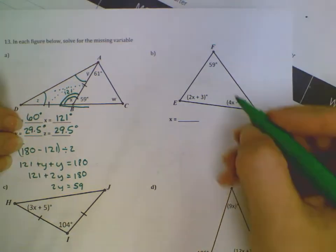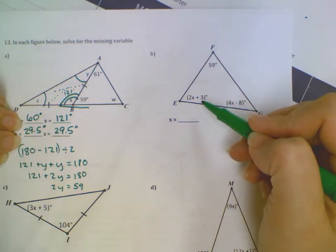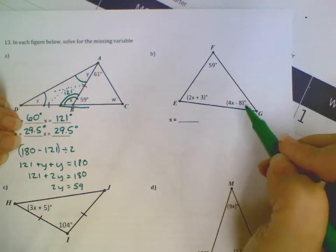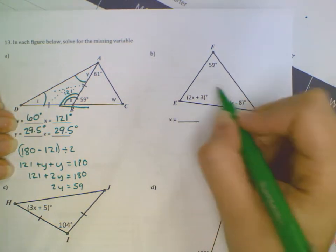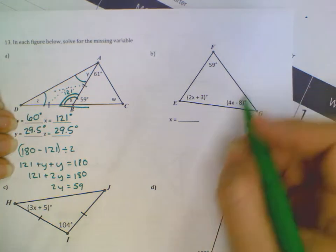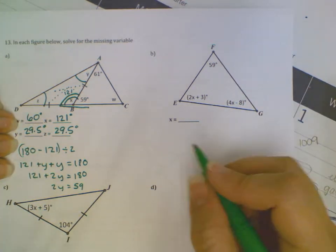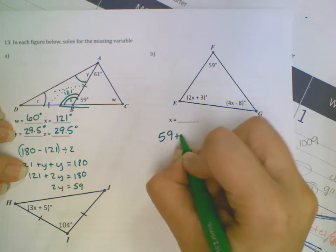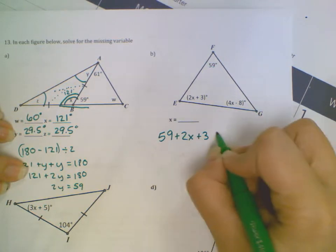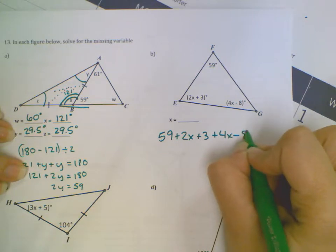For F, it gives me one angle, and then I need to solve for X in order to find these other two angles. I'm only looking for X, though. So really, all I need to do is add all these angles together and set them equal to 180, because we know that all the angles of a triangle equal 180. So 59 plus 2X plus 3 plus 4X minus 8 equals 180.